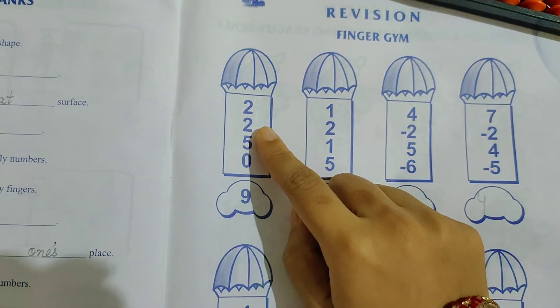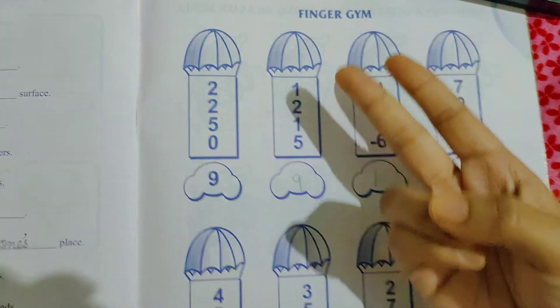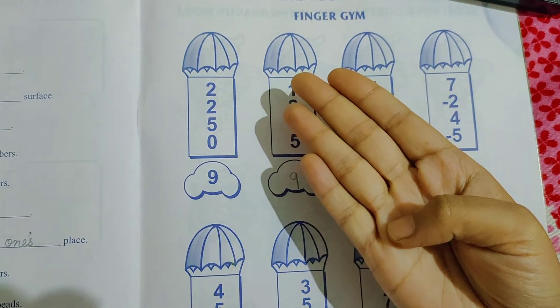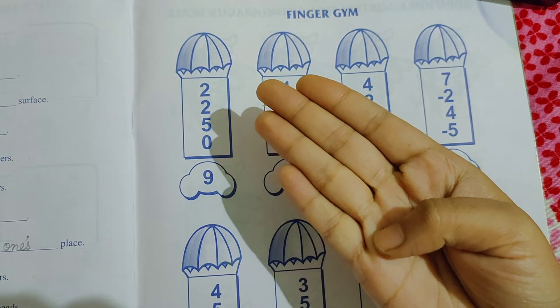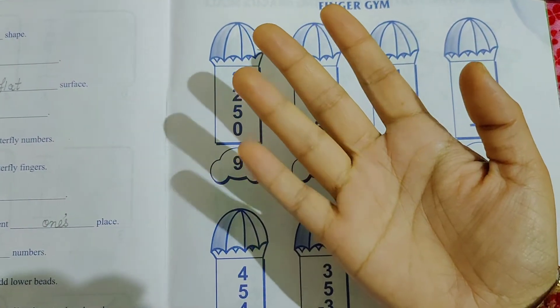See the first question. 2. Then 2 fingers you have to open. Again you have to add 2. Again 2 fingers you will open. Again 5 is there. So you have to open thumb because thumb has value 5. So the answer is 5, 6, 7, 8, 9.